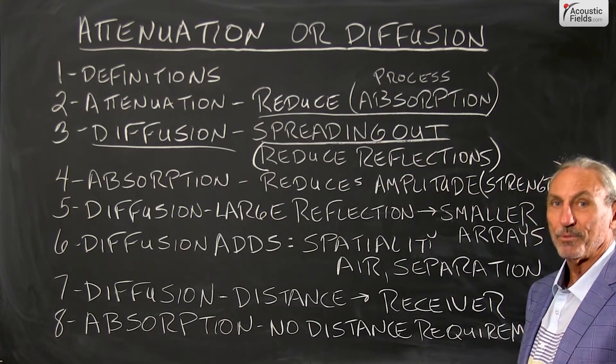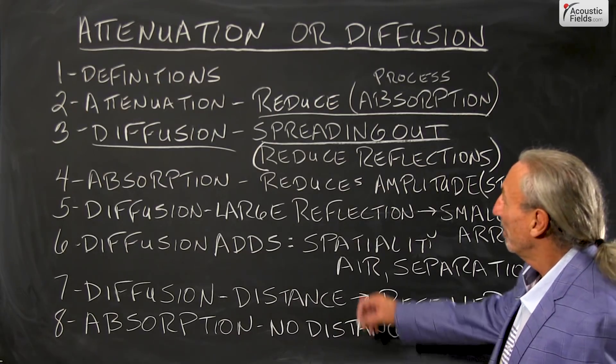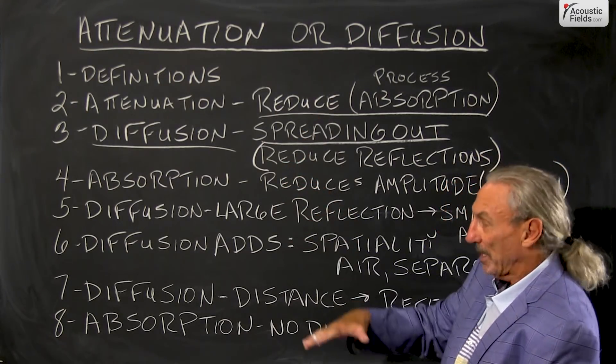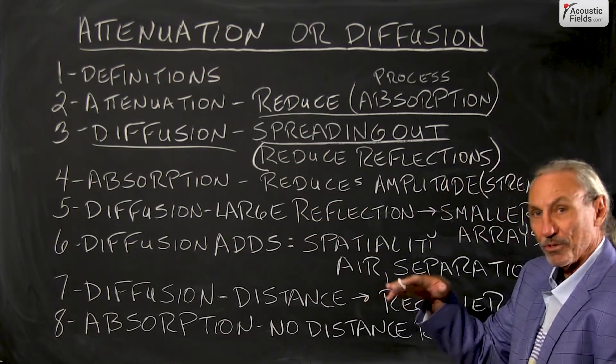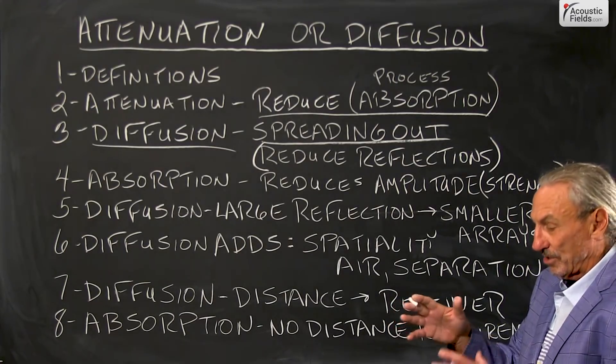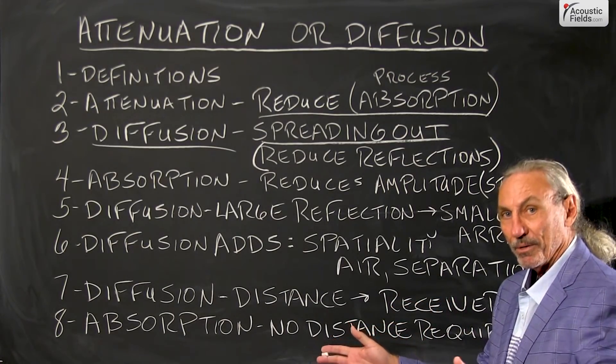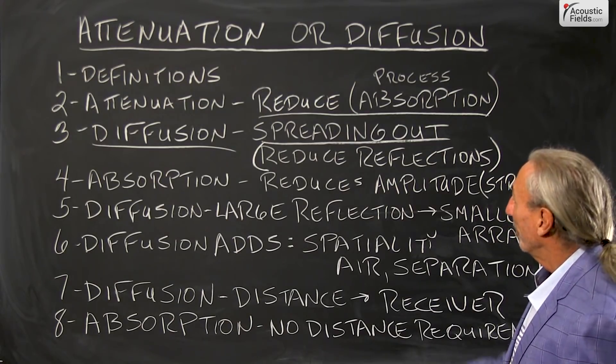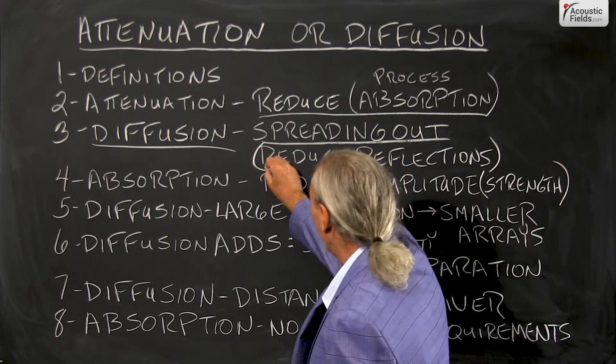So it's a little bit tricky but if you think about attenuation as shrinking, diffusion doesn't do that, it doesn't shrink. It just takes the bigger parts and spreads them out into smaller parts, especially when it comes to reflections.